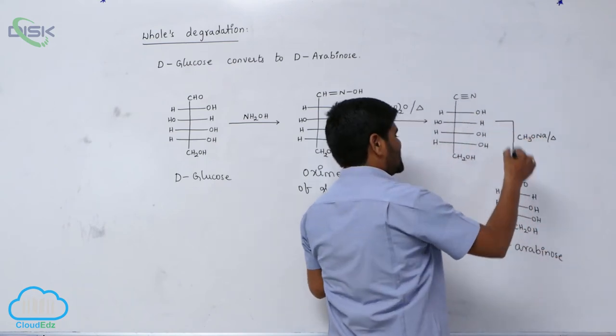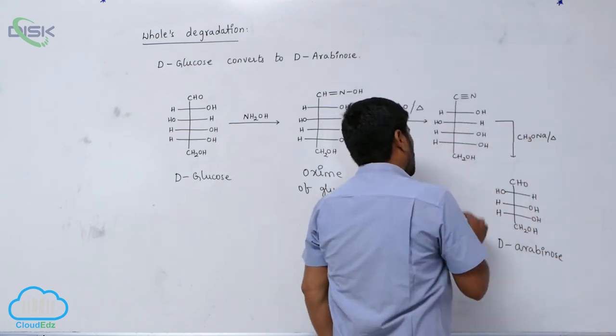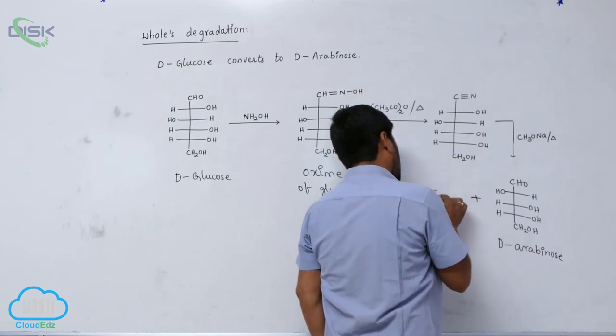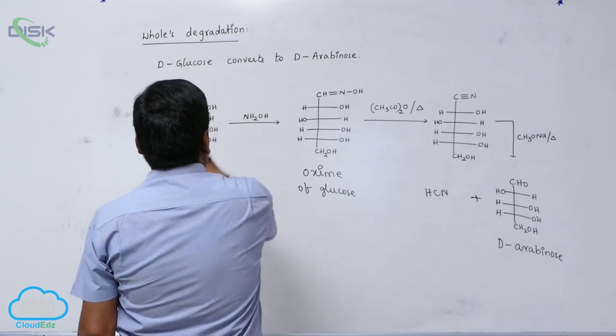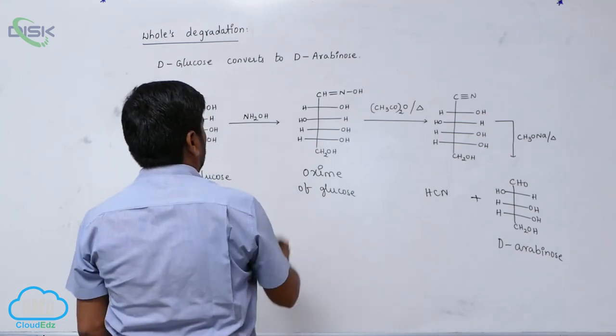This particular synthesis is known as what? Ohl's degradation. Loss of which takes place? Hydrogen cyanide. So D-glucose converts into which one? D-arabinose.